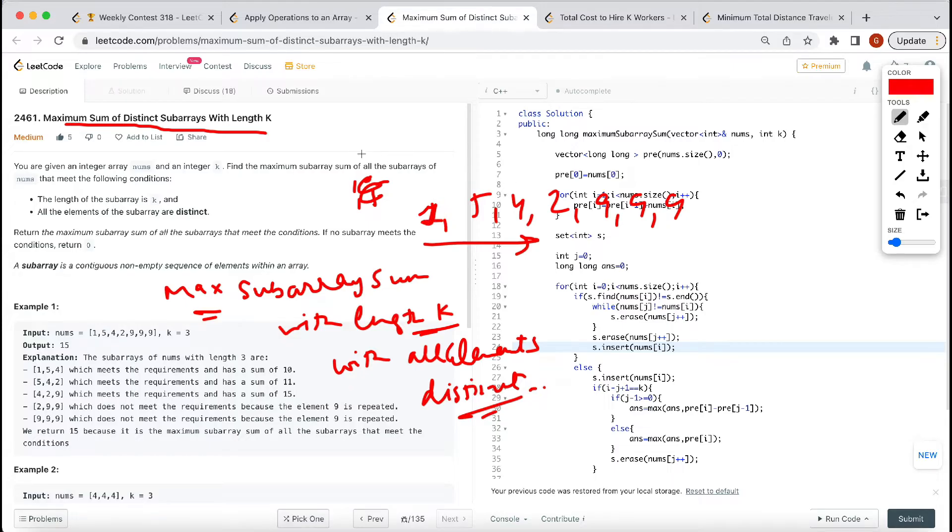How do we store the answer? We will use prefix sum. We will do one, six, ten, twelve, twelve or nine, twenty-one, twenty-one, thirty, thirty-nine. So we will do that.